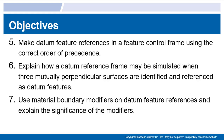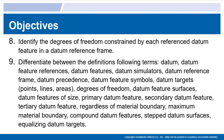Number five, make datum feature references in a feature control frame using the correct order of precedence. Number six, explain how a datum reference frame may be simulated when three mutually perpendicular surfaces are identified and referenced as datum features. Number seven, use material boundary modifiers on datum feature references and explain the significance of those modifiers. Number eight, identify the degrees of freedom constrained by each reference datum feature in a datum reference frame.